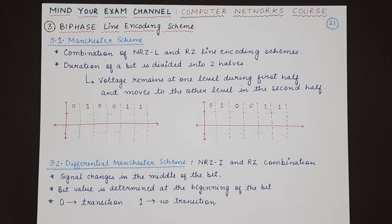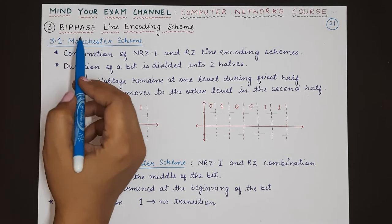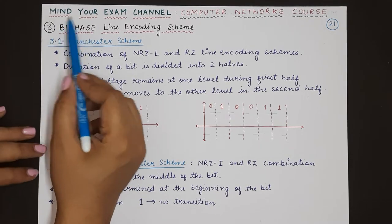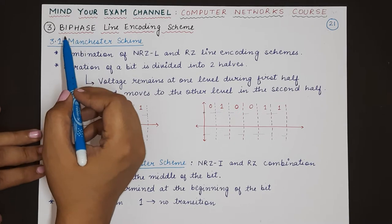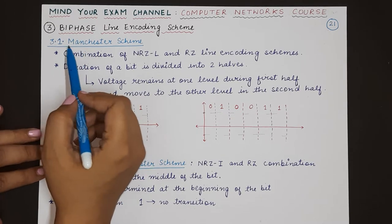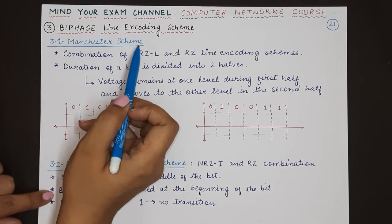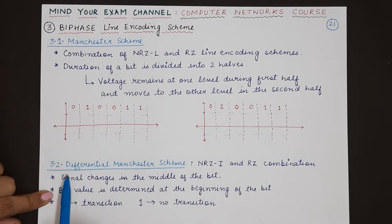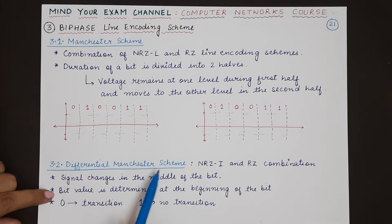This is a part of the polar line coding scheme. Biphase is a subcategory, and inside biphase there are two other categories: the Manchester scheme and the differential Manchester scheme.